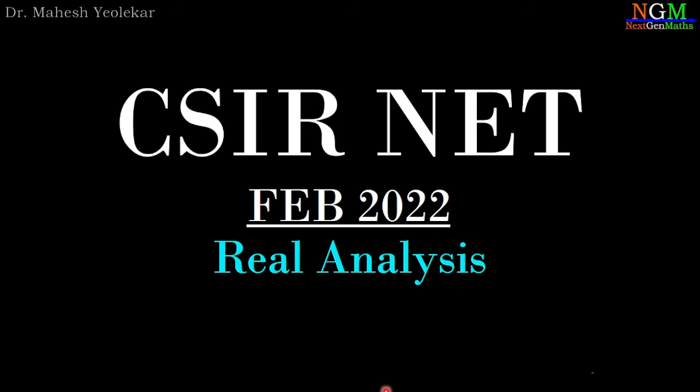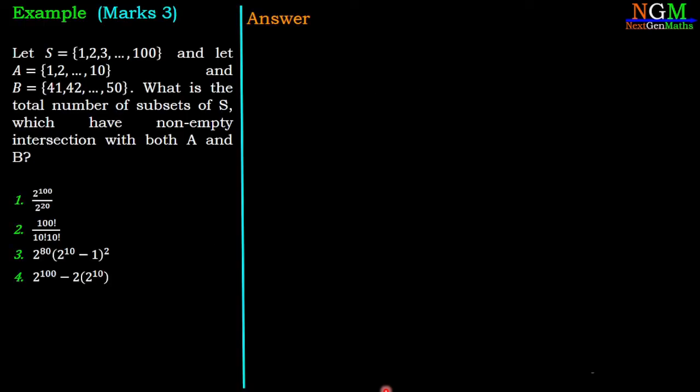In this video, we are going to discuss problem 3 of the CSIR NET December 2022 real analysis section. The problem is: let S equal 1 to 100, let A equal 1 to 10, and B equal 41 to 50. What is the total number of subsets of S which have non-empty intersection with both A and B?